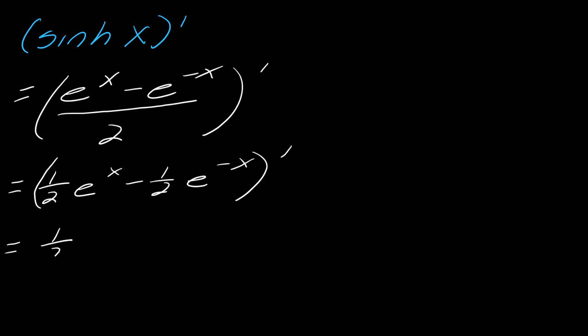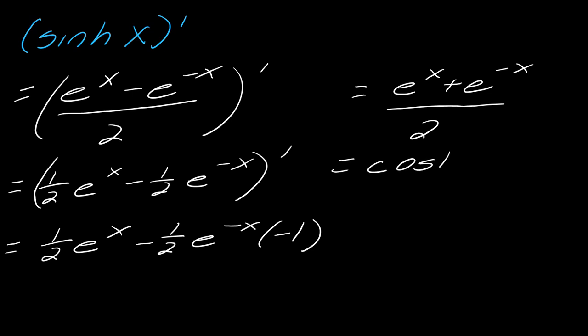In doing that, this will be 1 half. The derivative of e to the x is just e to the x. The derivative of e to the negative x will be e to the negative x times negative 1. Don't forget that you have to use the chain rule here. Now you can see that you could actually rewrite this whole thing still over 2. This will be e to the x plus e to the negative x, all over 2. And so what is that? That is just cosh x. So that would be the derivative.